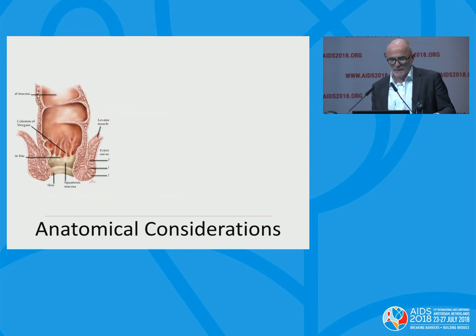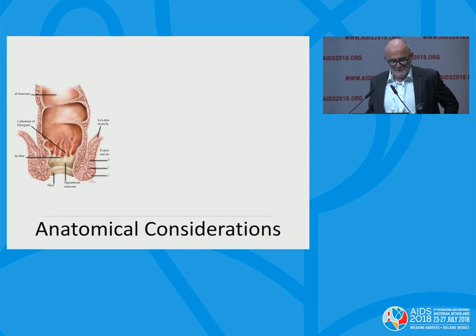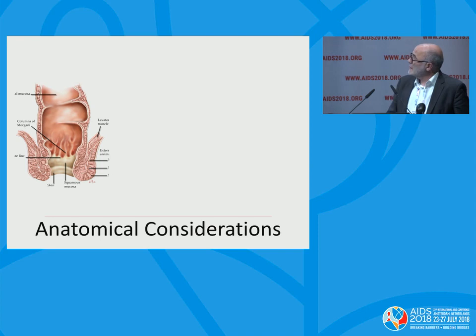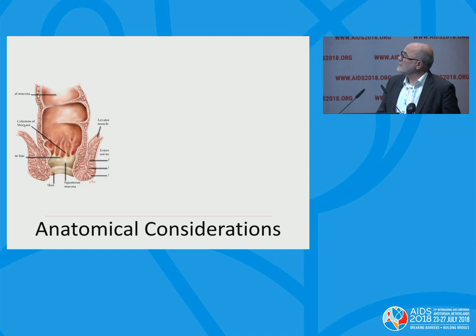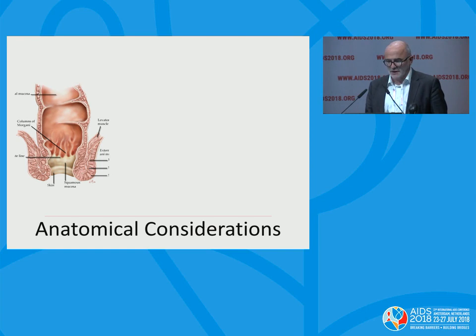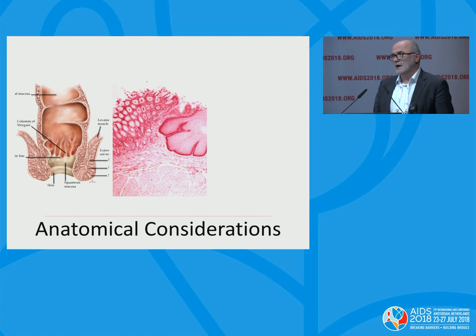Let's start off with some anatomy, because some people get very confused about the anorectum. This is a sagittal section, and what you can see is essentially the stratified squamous epithelium of the anal canal, the dentate line, and then above that the rectum. When we talk about the anorectum, there are really two very different tissue types. This is shown more dramatically here in a histological section of the anorectal junction, where you see the transition from a very clear stratified squamous epithelium on the right, abutting to a columnar epithelium.